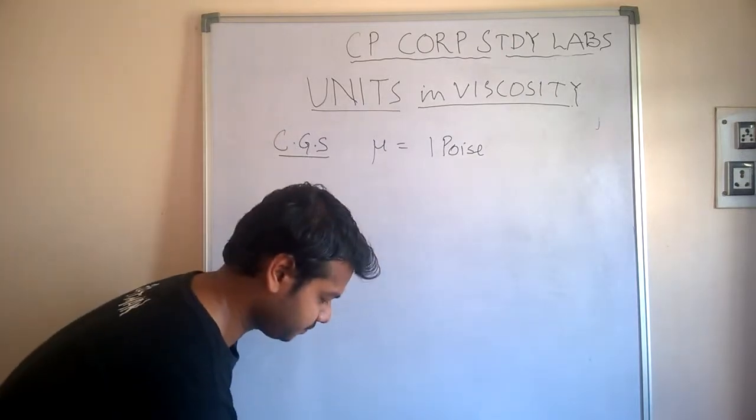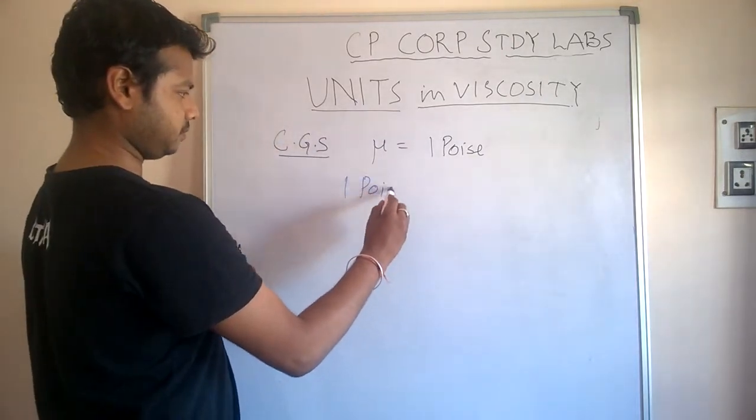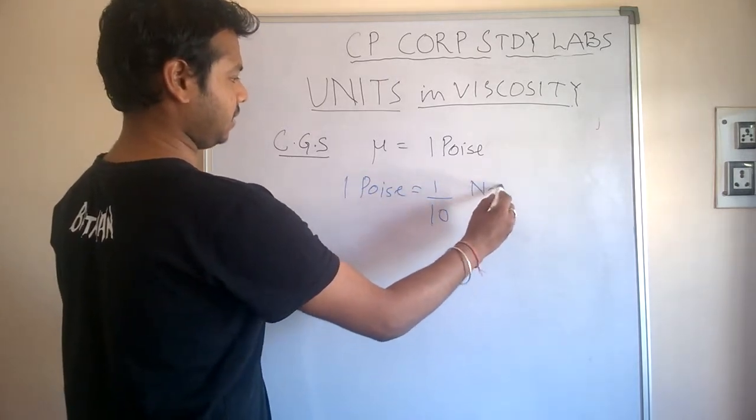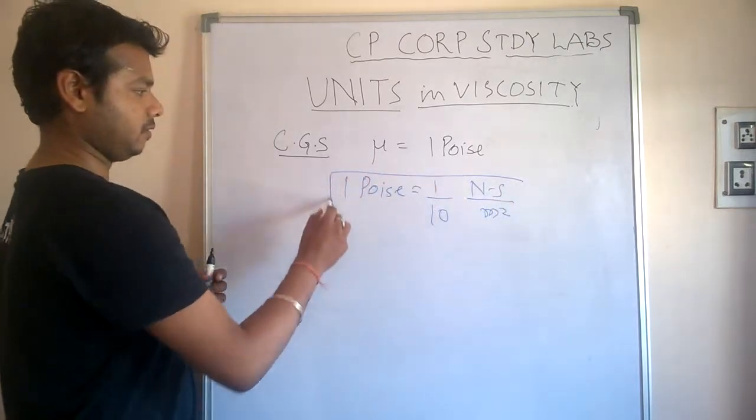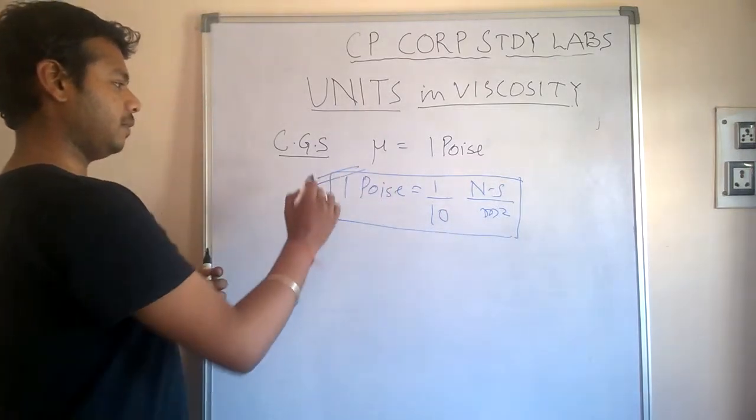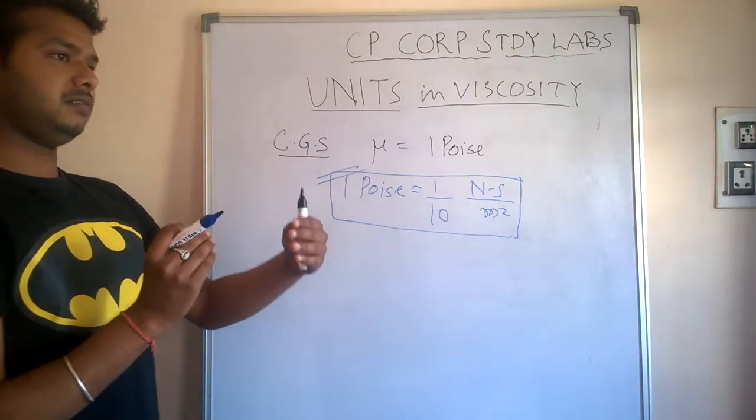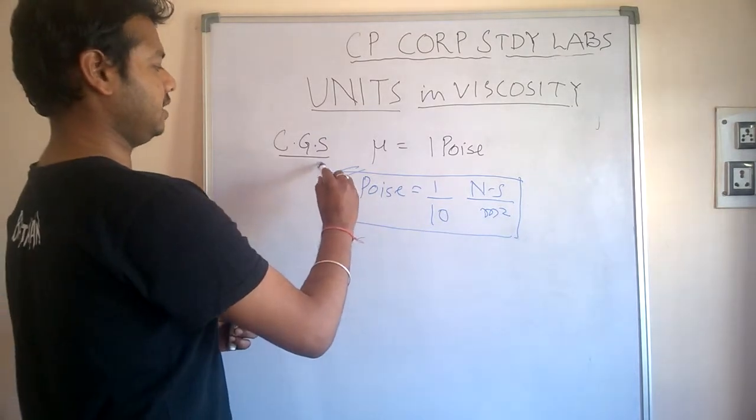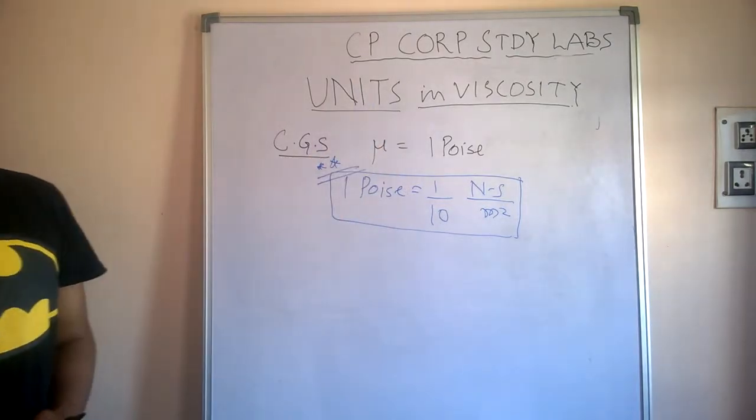What is one poise equal to? One poise equals one by ten newton second per meter square in SI. Very important - this will be used in different numerical problems where we have given the viscosity of water in centipoise and all. This relation will easily solve if you remember this value: one poise equals one by ten newton second per meter square.